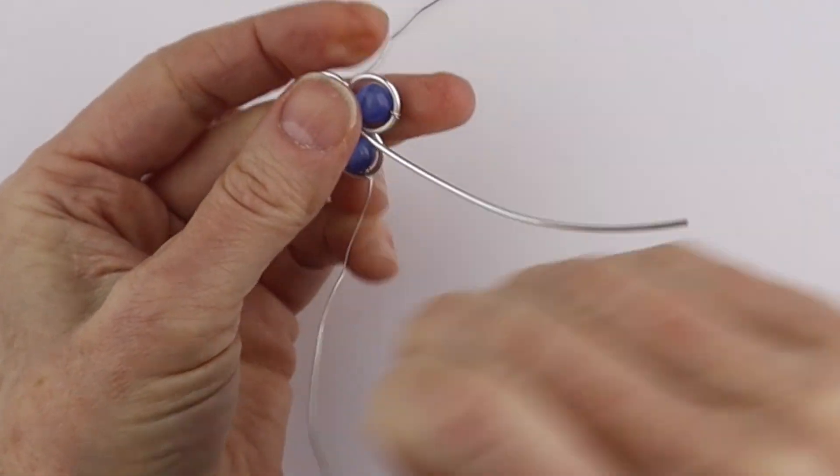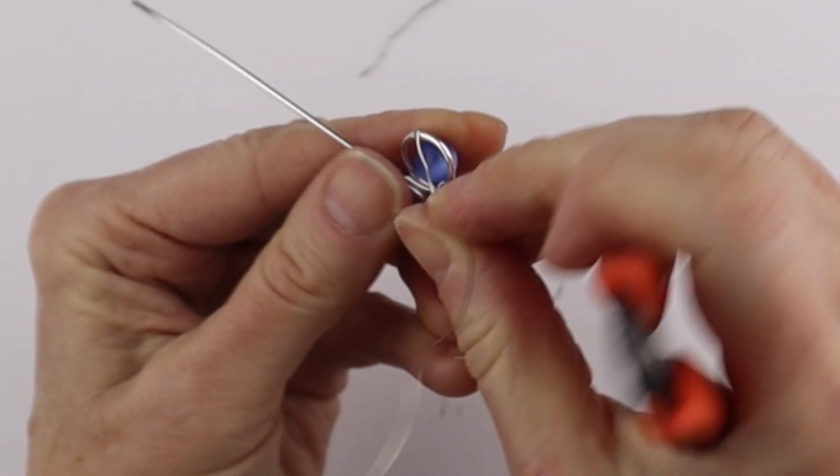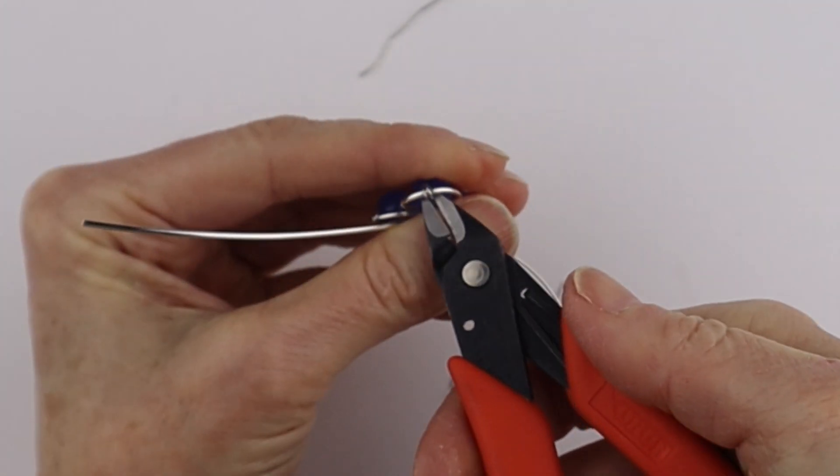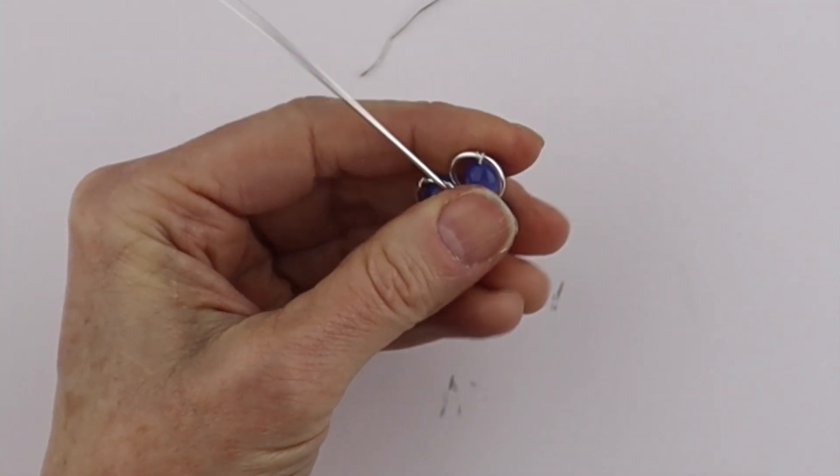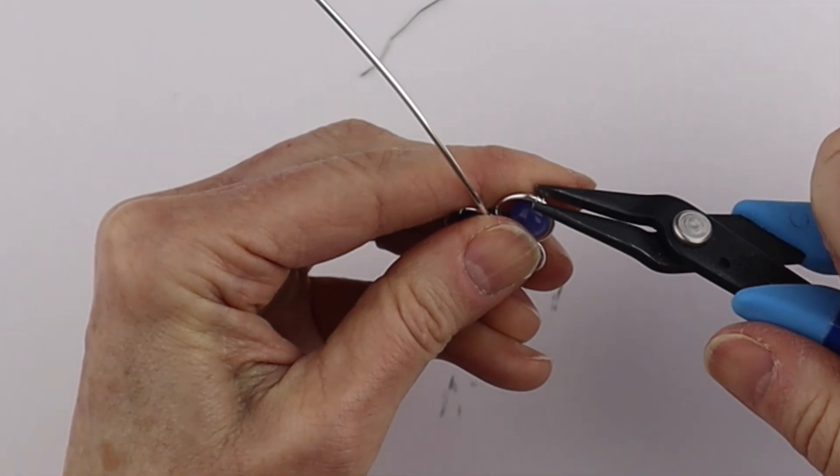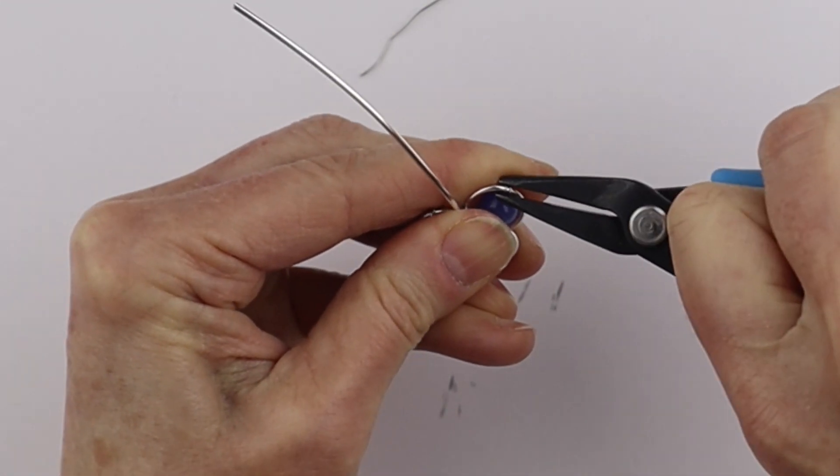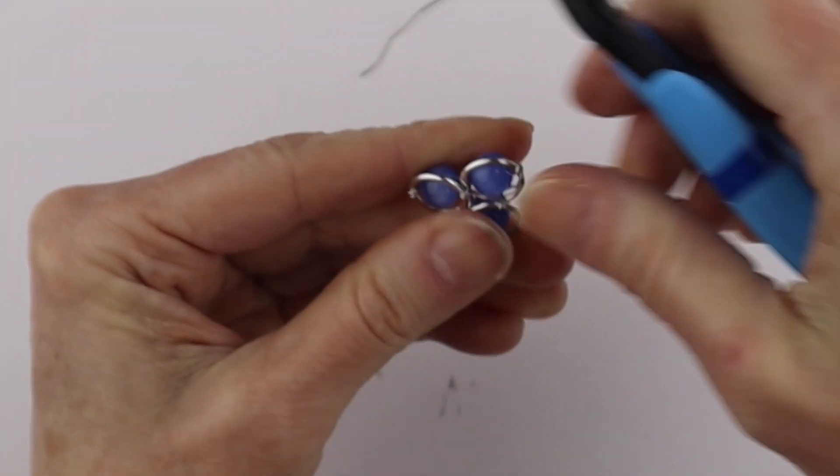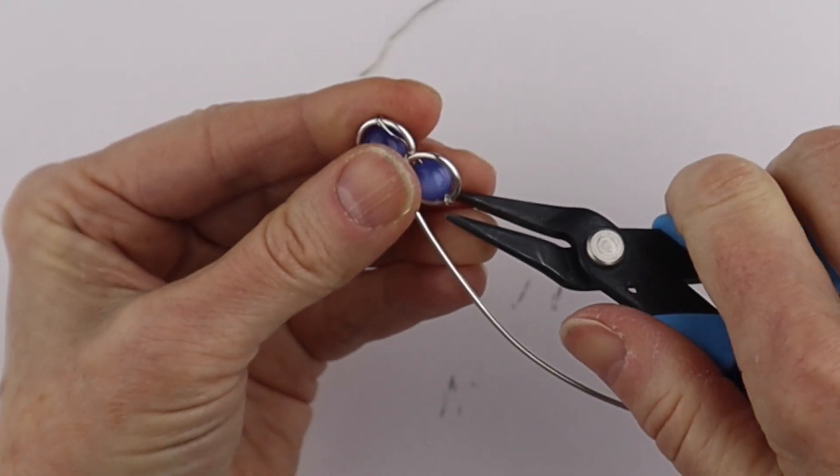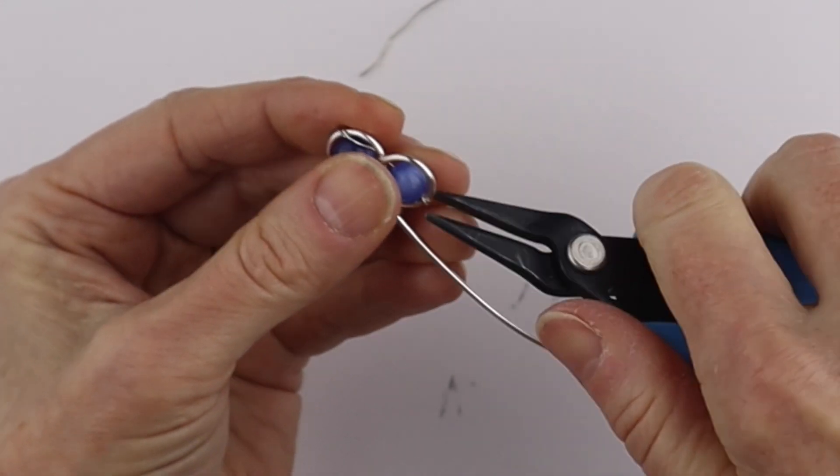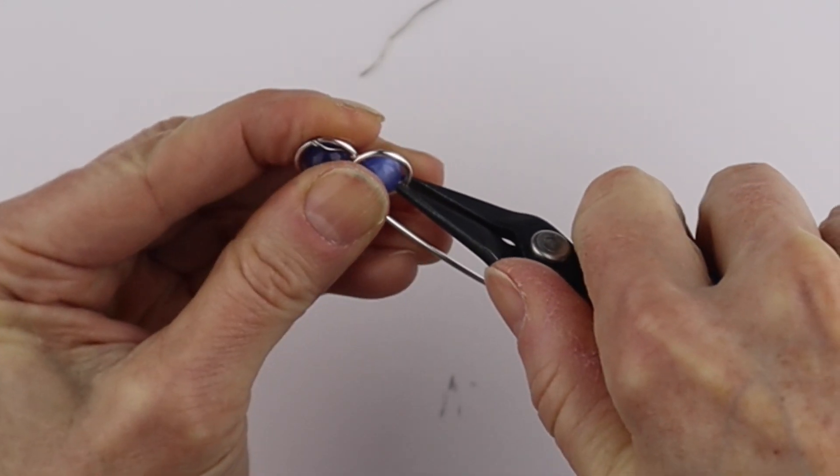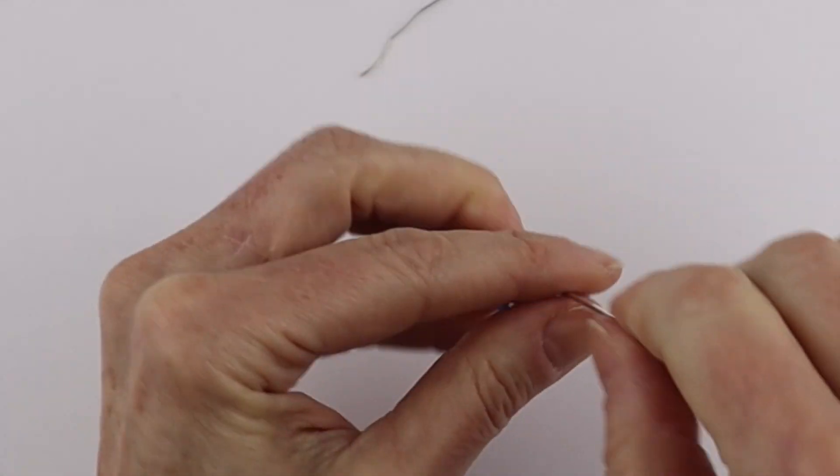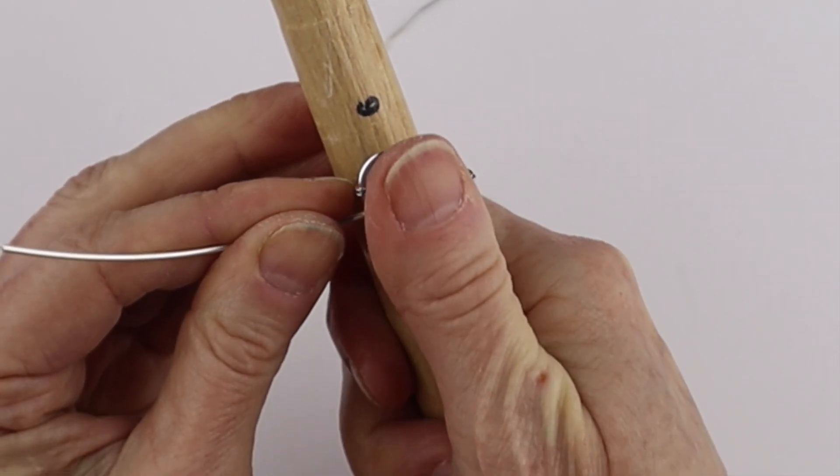Just wind it around a couple of times, bring that to the back and we can trim that one on that side. Bring that one to the back and trim that. This wire's way too long. And then we're just going to pinch those ends and rotate them a bit in so they're not pokey. This one too, just take it, pinch it and rotate it in so there's no pokey ends.